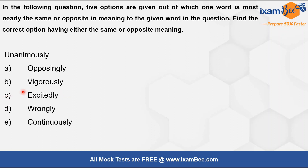Next word: 'unanimously.' This means sarv sehmati — everybody agrees to the decision. 'Vigorously' means energetically with a lot of power — not related. 'Excitedly,' 'wrongly,' and 'continuously' also don't fit. 'Opposingly' means some people are opposing — it is a near antonym of unanimously. So the correct answer is option A — opposingly.